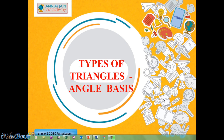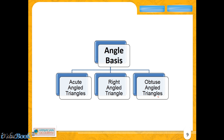Let us now see the types of triangle, and this time we are going to see on an angle basis. On the basis of angle, the triangle can be classified into three categories: the first is an acute angled triangle, the second is a right angled triangle, and the third is an obtuse angled triangle.